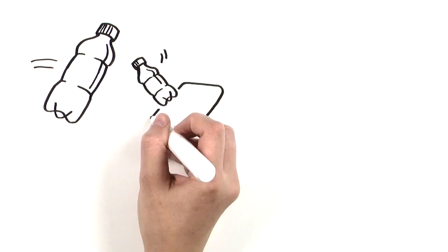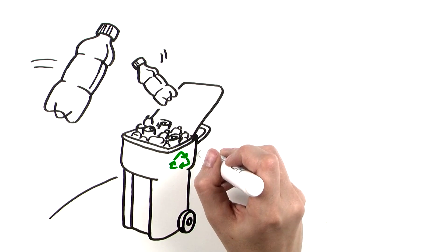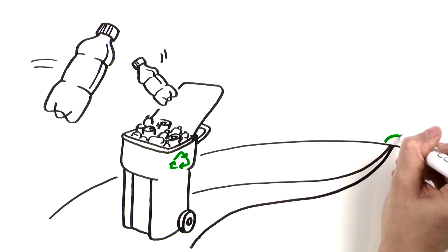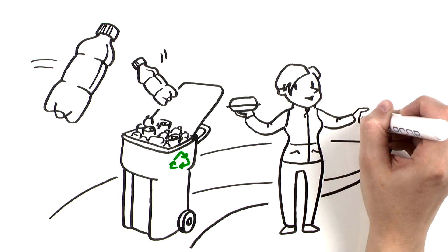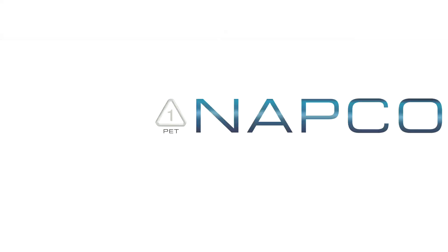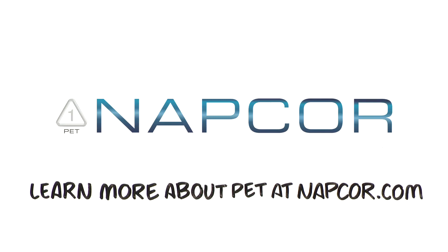So toss your PET bottle in the recycling bin and ensure its destiny is a valued domestic raw material. It might end up in your next water bottle, fleece jacket, or takeout container. Learn more about PET at napcor.com.